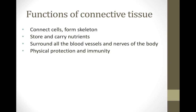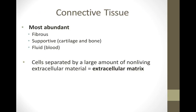Blood is also a connective tissue. Connective tissue surrounds all the blood vessels and nerves of the body, essentially forming tight wraps around individual structures and organs such as nerves and blood vessels. Connective tissue also provides physical protection and immunity — in the sense of fat underneath the skin as well as your white blood cells.